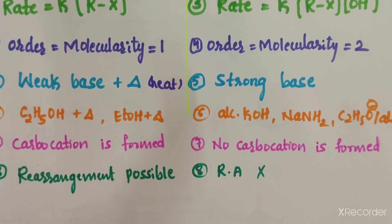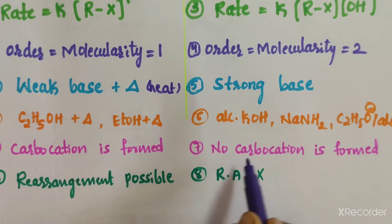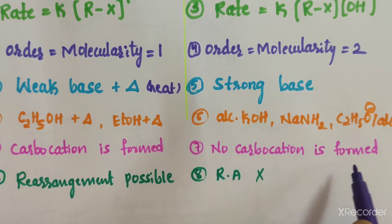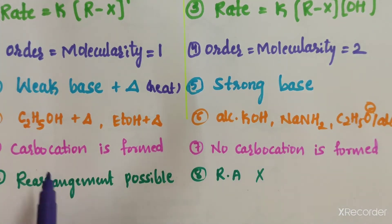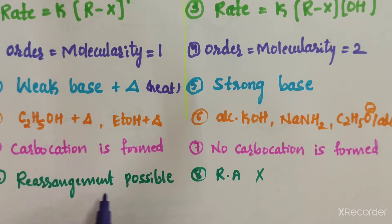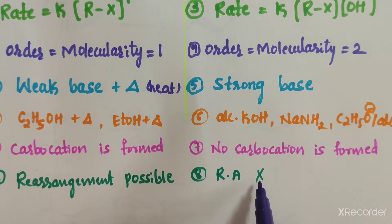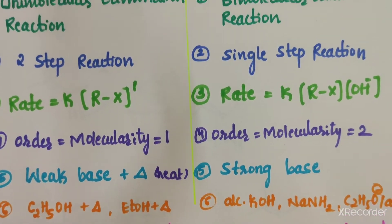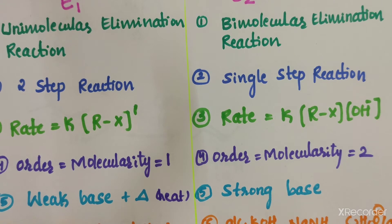Another difference is that E1 elimination reaction involves carbocation formation, but in E2 there is no carbocation formed. The last difference is that rearrangement is possible in E1, but in E2 elimination reaction there is no rearrangement. These are the key differences between E1 and E2 elimination reactions.